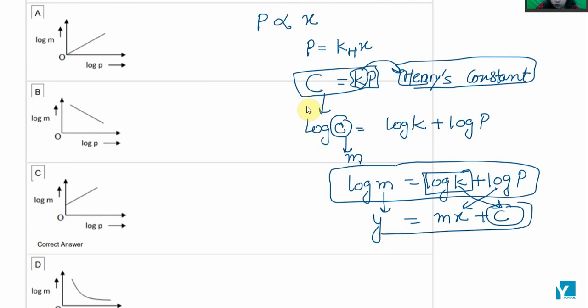And it is an equation of a straight line. So our answer should be either A or C. Since there's a linear increase, it cannot be B.